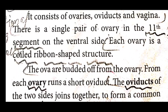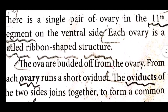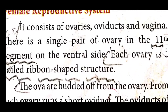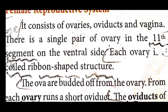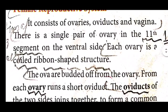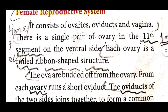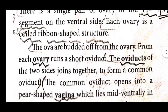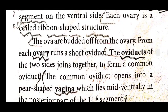The ribbon-shaped ovary structure produces ova that are budded off from the ovary.